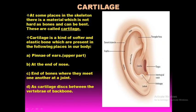Next we come to cartilage, one of the important structures of our skeletal system. If you hold the pinna of your ear, you will observe it is a slightly softer structure — not exactly like the bones of the hand or leg. At some places there is a material which is not as hard as bone and can be bent. This flexible material is known as cartilage.